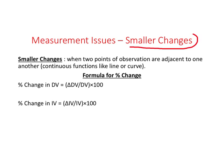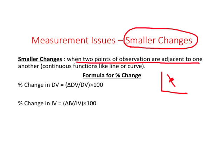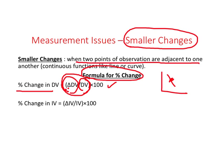Now let us look at percent change when we are looking at smaller changes. By smaller changes, what we have in mind is when two points of observation are adjacent to one another, or what we are looking at is a continuous function like a line or a curve. For this, the formula for percent change in dependent variable is: change in dependent variable (triangle represents change) divided by the value of dependent variable, times 100. We do the same thing for independent variable: change in independent variable divided by its value, times 100.